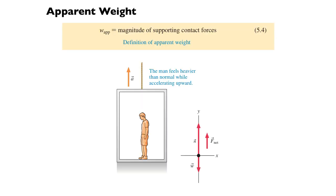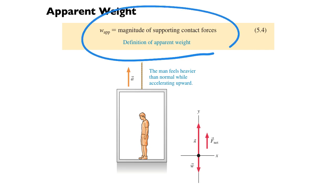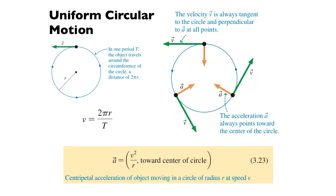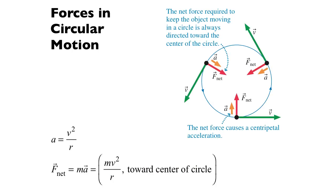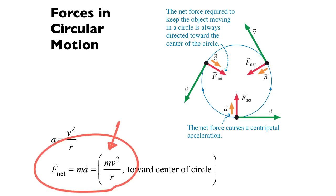Now I want to remind you about the idea of apparent weight. We said the apparent weight is the magnitude of supporting contact forces — that's how we define it. We'll see a couple of examples in problems we're going to solve today that have to do with circular motion. A quick reminder: for motion in a circle at constant speed, the acceleration is v² over r directed towards the center, so the net force is directed towards the center with magnitude mv²/r.